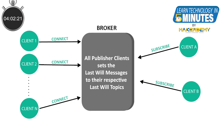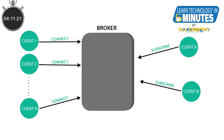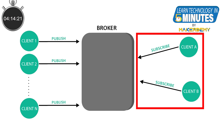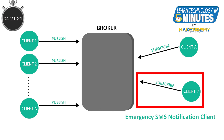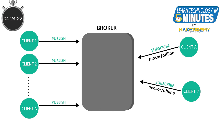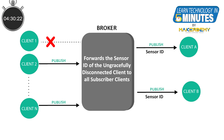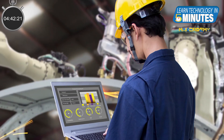This issue could have been easily solved if the system had used the Last Will and Testament feature of MQTT. All the sensor nodes, on their first connection to the broker, will set the last will message as their sensor ID to a topic called sensor/offline. Let's say we have two subscriber clients: one for the HVAC control dashboard in the factory and another is an emergency SMS notification client. Both clients are subscribed to the same last will message topic. Now when a sensor disconnects ungracefully, the broker will forward the sensor ID of the specific node to both clients. One client will show the details on the dashboard while the other will send an SMS to the concerned staff. With the sensor ID information, technicians can easily find and replace or repair the specific sensor node.